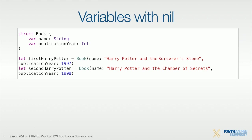As I already said, variables in Swift cannot have the value nil — there has to be some value in there. An integer always has to be a number, a double also has to be a number, and a string can be empty but it's still a string. So you don't have a null pointer concept like in other languages. However, this is not always useful — sometimes you want this concept of a null pointer.